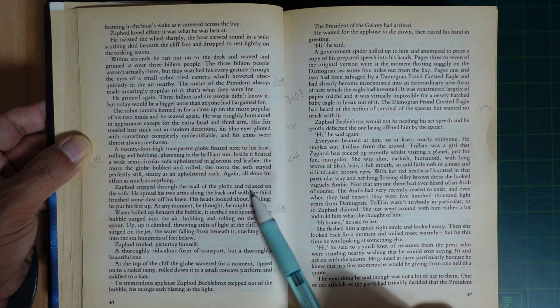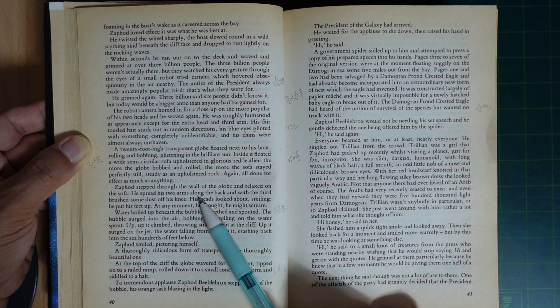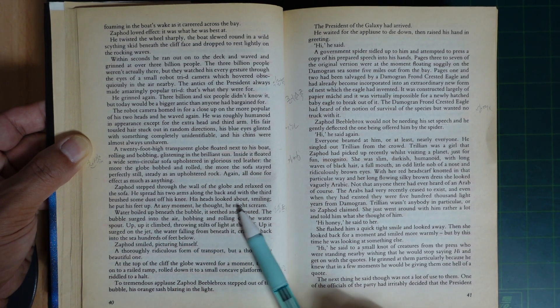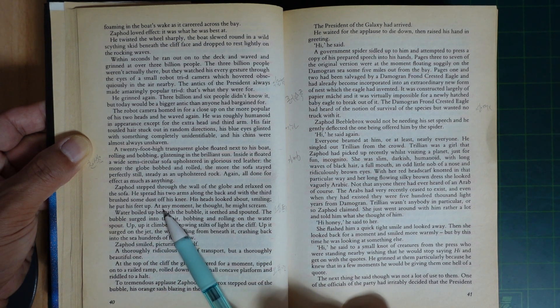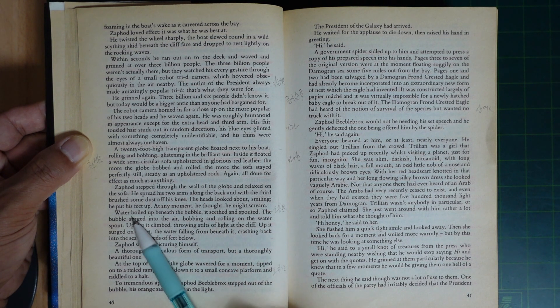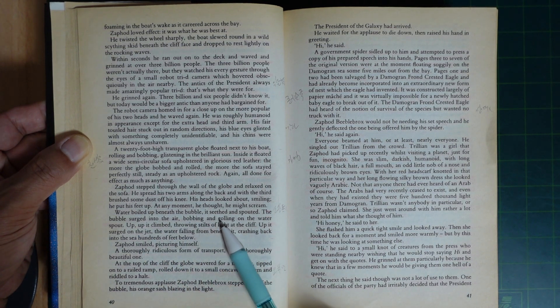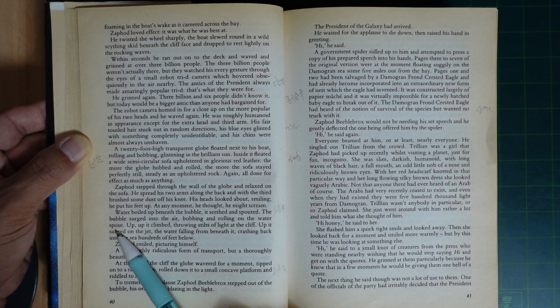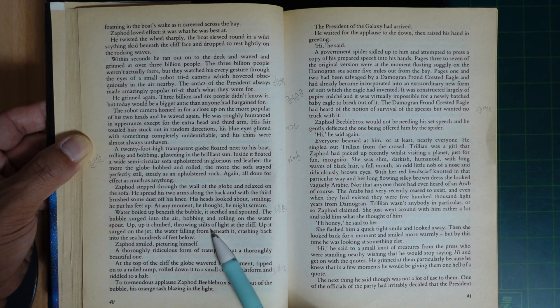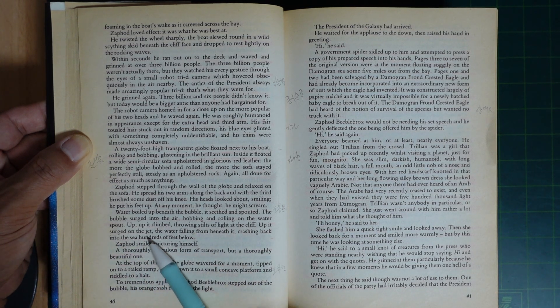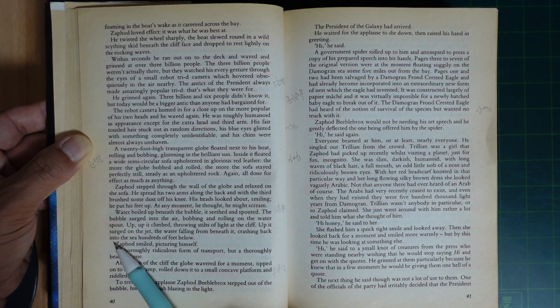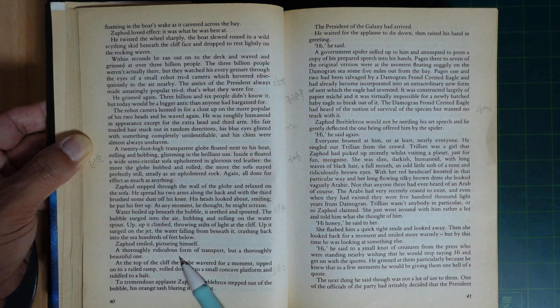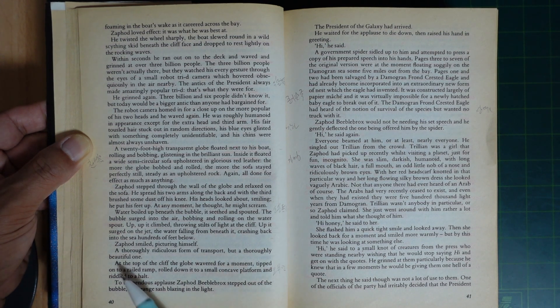Zaphod stepped through the wall of the globe and relaxed on the sofa. He spread his two arms along the back and with the third brushed some dust off his knee. His heads looked about, smiling. He put his feet up. At any moment, he thought, he might scream. Water boiled and finished bubbling. It ceased and spouted. The bubble surged up through the air, bobbing and rolling on the water spout. Up, up it climbed, throwing stills of light at the cliffs. Up it surged on the jet, the water falling from its thinness, crashing back into the sea three hundred feet below. Zaphod smiled, picturing himself, a thoroughly ridiculous form of transport, but a thoroughly beautiful one.